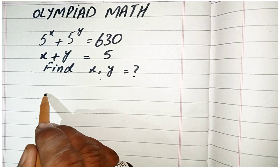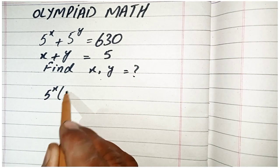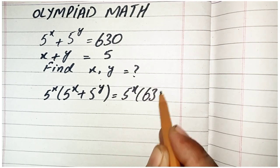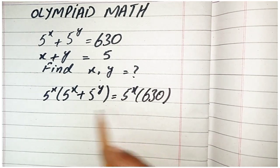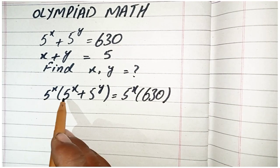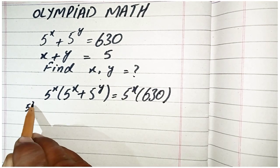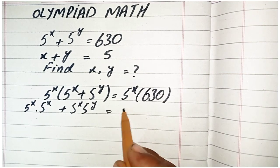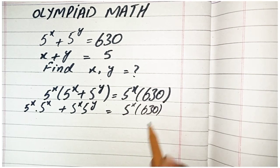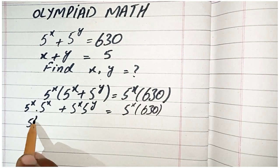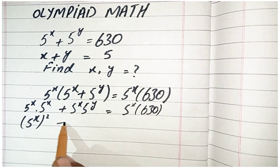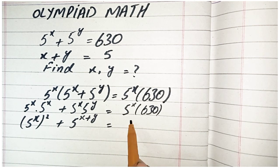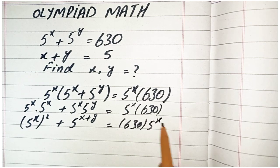We consider the first equation: 5^x plus 5^y is equal to 630. We multiply both sides by 5 power x. This becomes 5 power x times 5 power x, plus 5 power x times 5 power y, is equal to 5 power x times 630. We write this as 5 power 2x plus 5 power (x plus y) is equal to 630 times 5 power x.